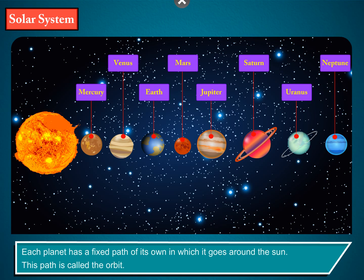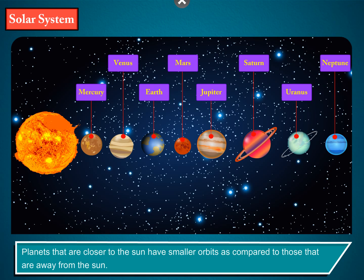Each planet has a fixed path of its own in which it goes around the sun. This path is called the orbit. Planets that are closer to the sun have smaller orbits compared to those that are farther away.